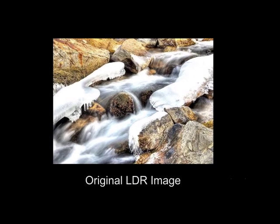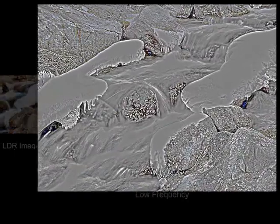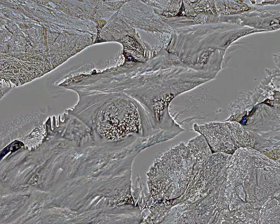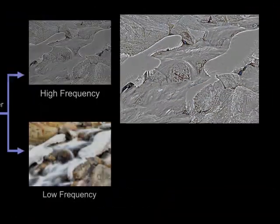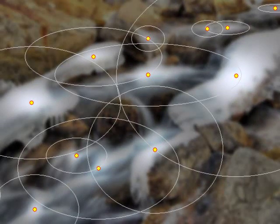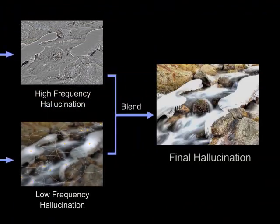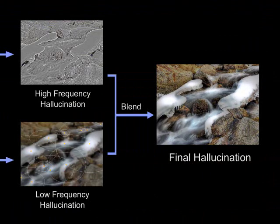Here we show how our system works internally. Basically, we decompose the original photograph into a high-frequency texture and a low-frequency illumination component. We hallucinate the high-frequency texture by constrained texture synthesis and the low-frequency illumination by automatic Gaussian fitting. Finally, we combine these two components together for the final result.